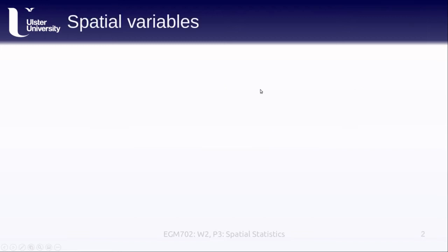Over the course of your GIS or remote sensing course, you are probably thinking quite a bit about spatial variables. We can think about these as constituting a number of different components. The first is a deterministic component — a variable where if we have some function of x and y, putting in a certain x and y coordinate will always give us the same result. There's no variation with space or time.